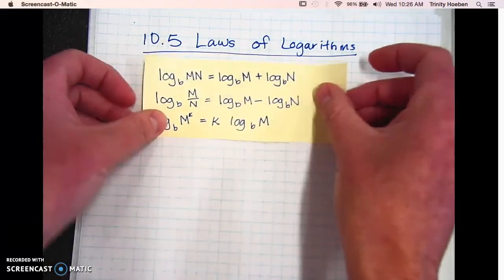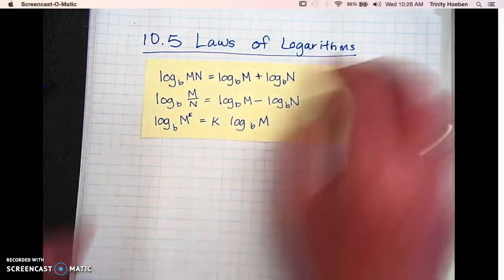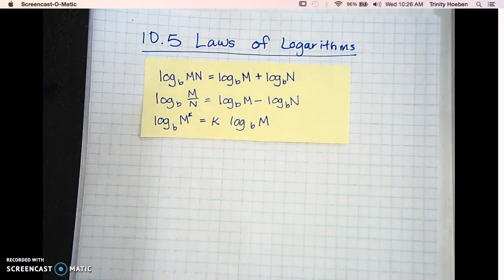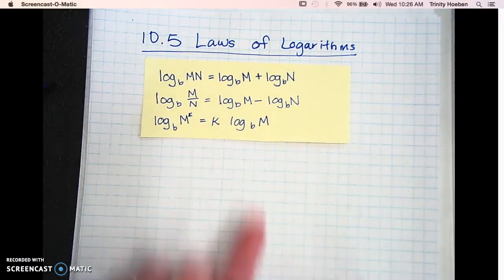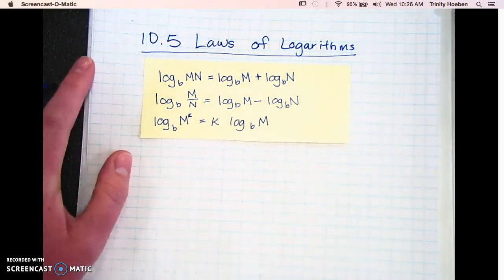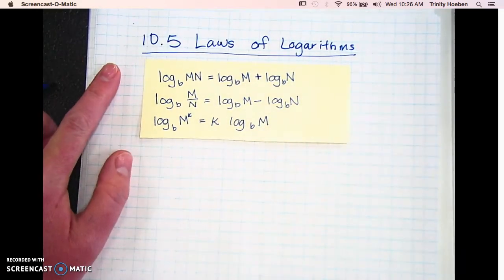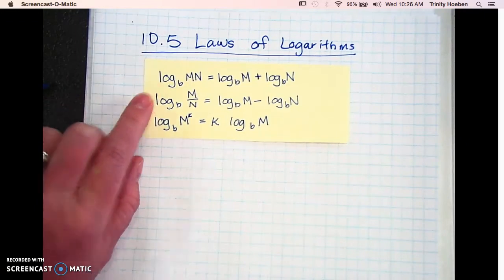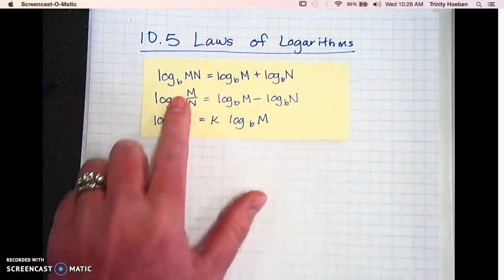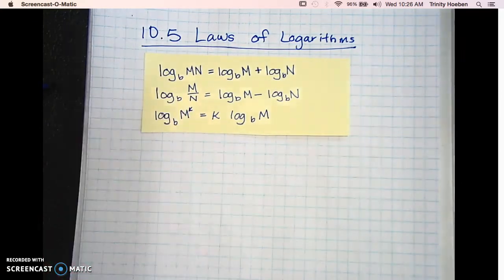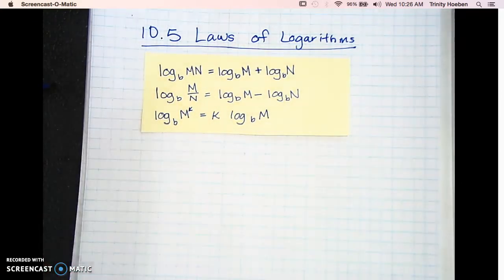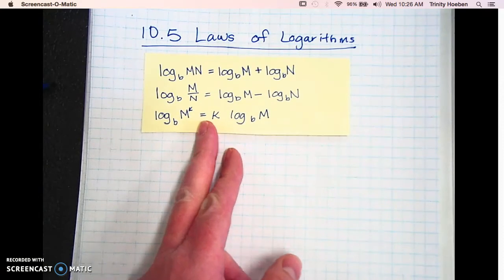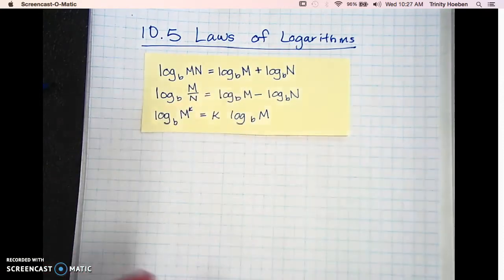Here are the three laws of logarithms that we're going to talk about today. Section 10.5 is called Laws of Logarithms. Before each equal sign is what we're going to call condensed form, and after each equal sign is expanded form.